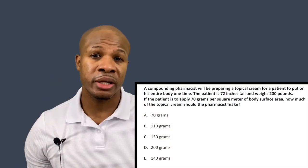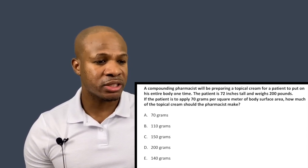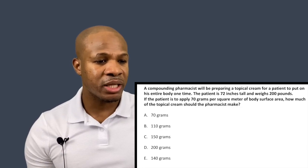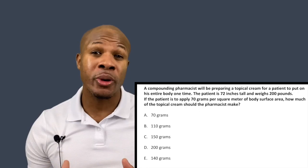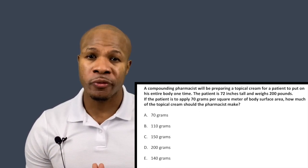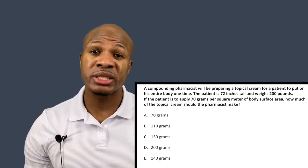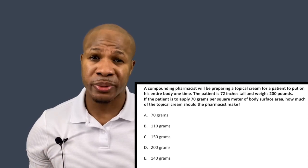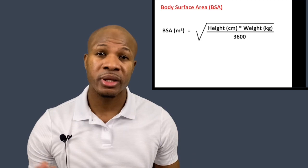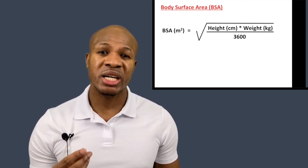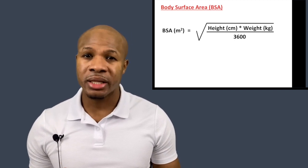Now let's go on to question number two. Question number two states: a compounding pharmacist will be preparing a topical cream for a patient to apply on his entire body one time. The patient is 72 inches tall and weighs 200 pounds. If the patient is to apply 70 grams per square meter of body surface area, how much topical cream should the pharmacist make? This is a straightforward question, but we need to know how to calculate body surface area, because that's what dictates how much cream the pharmacist makes. We need to memorize the BSA equation: total body surface area in meters squared equals the square root of the patient's height in centimeters times the patient's weight in kilograms divided by 3,600.